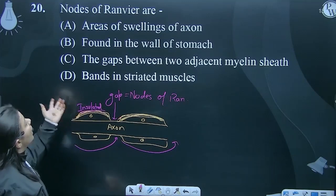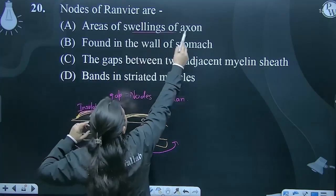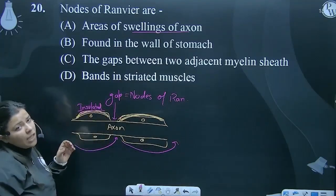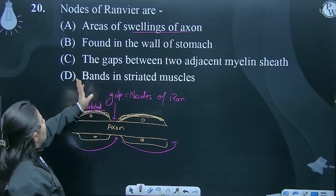Now we are asking, areas of swellings of axon - no, areas of swellings of axon are what? These are synaptic knobs, axon terminals actually. Found in the wall of stomach, no absolutely not.